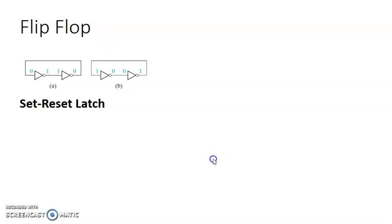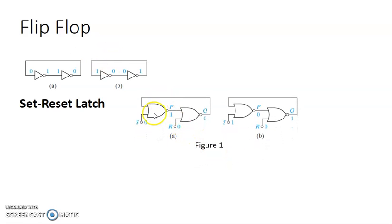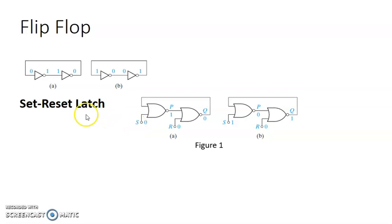Here is the circuit. With the two NOR gates, the output of the first will be given as an input for the second. Output of the second will be given as an input for the first one, like feedback. Along with the inputs set and reset. What I need to explain here is, similar to this, the output retains constant irrespective of the previous stages. If my S is 0 and R is 0, and my previous output is 1 and 0.